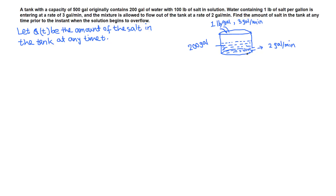Water is getting in at three gallons per minute and getting out at two gallons per minute, so per minute the volume of the water is increasing by one gallon. As usual, we let q(t) be the amount of salt in the tank at any time t. The initial amount of salt, q(0), is given as 100 pounds in the question.